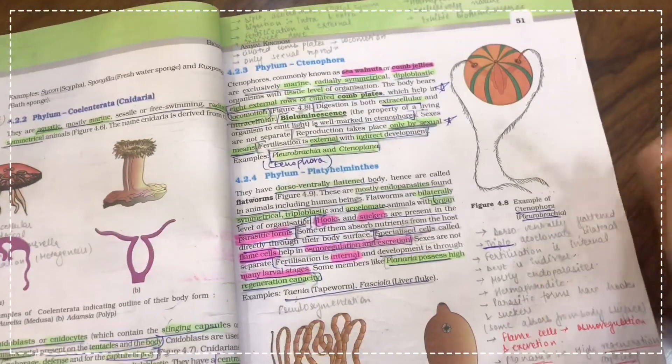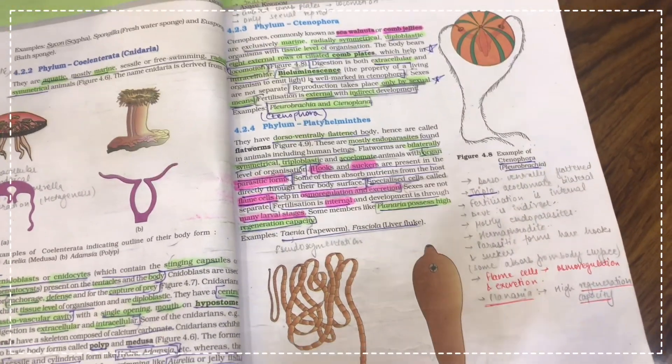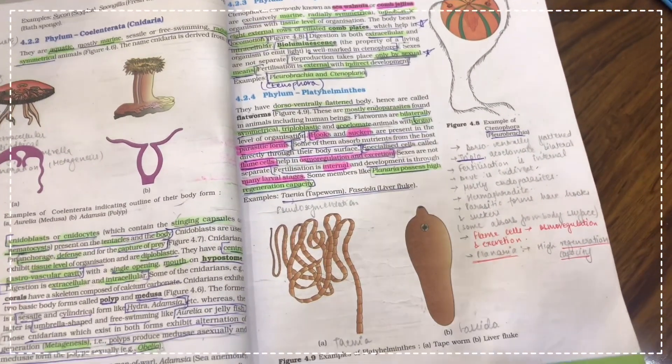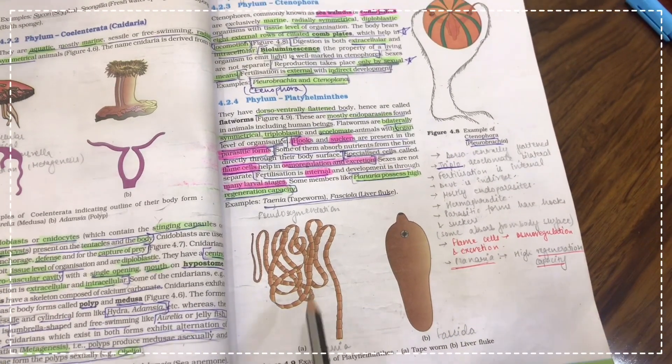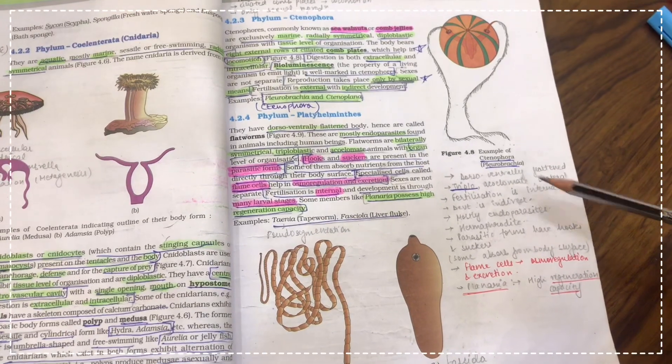You can see I have done this for every phylum. I have written all the properties related to that phylum in the pointers, and then I have written the name of the organism below the diagram for memorizing it quickly.